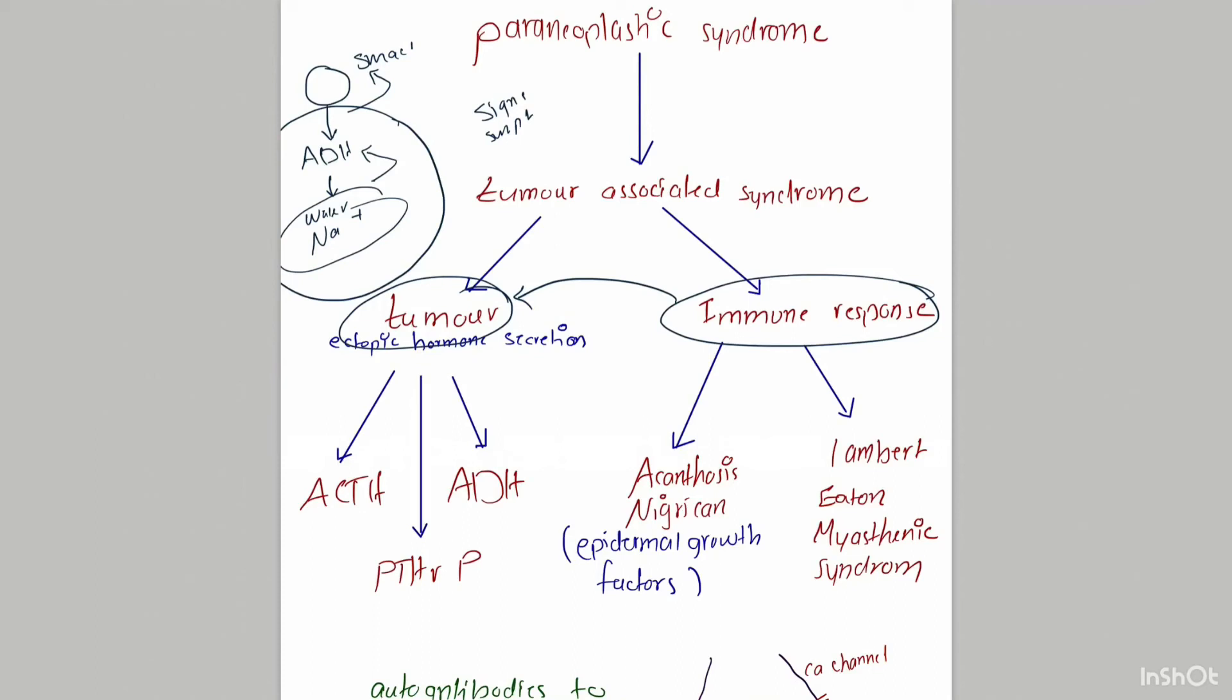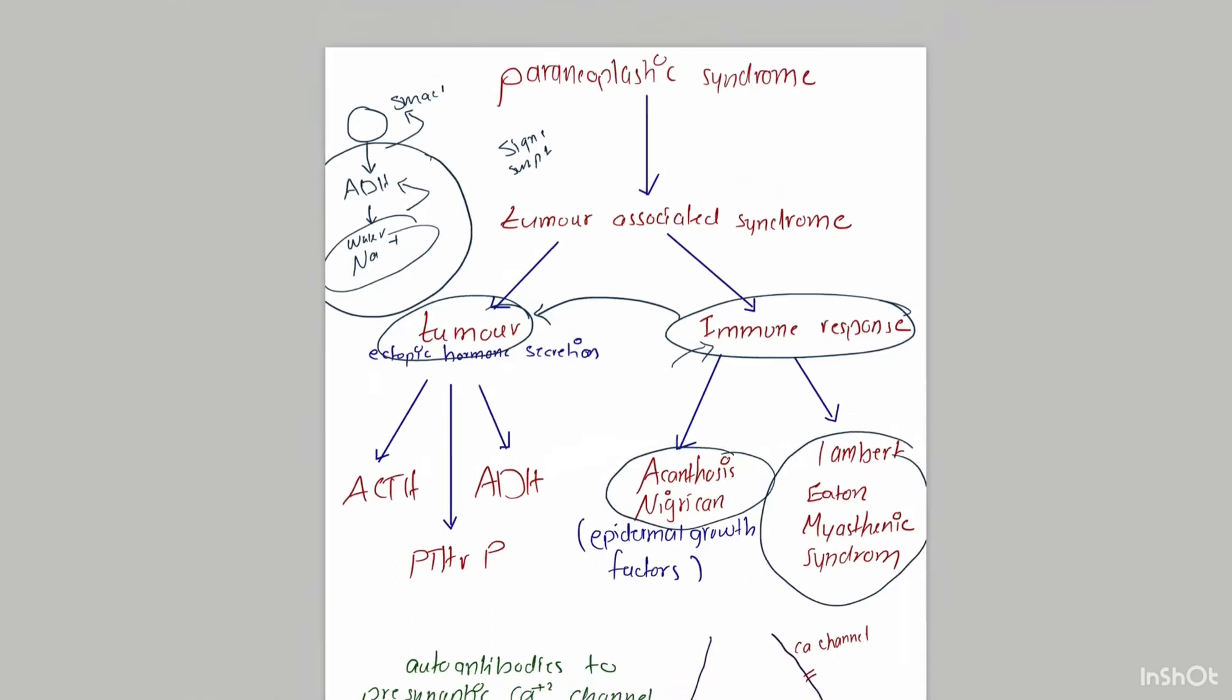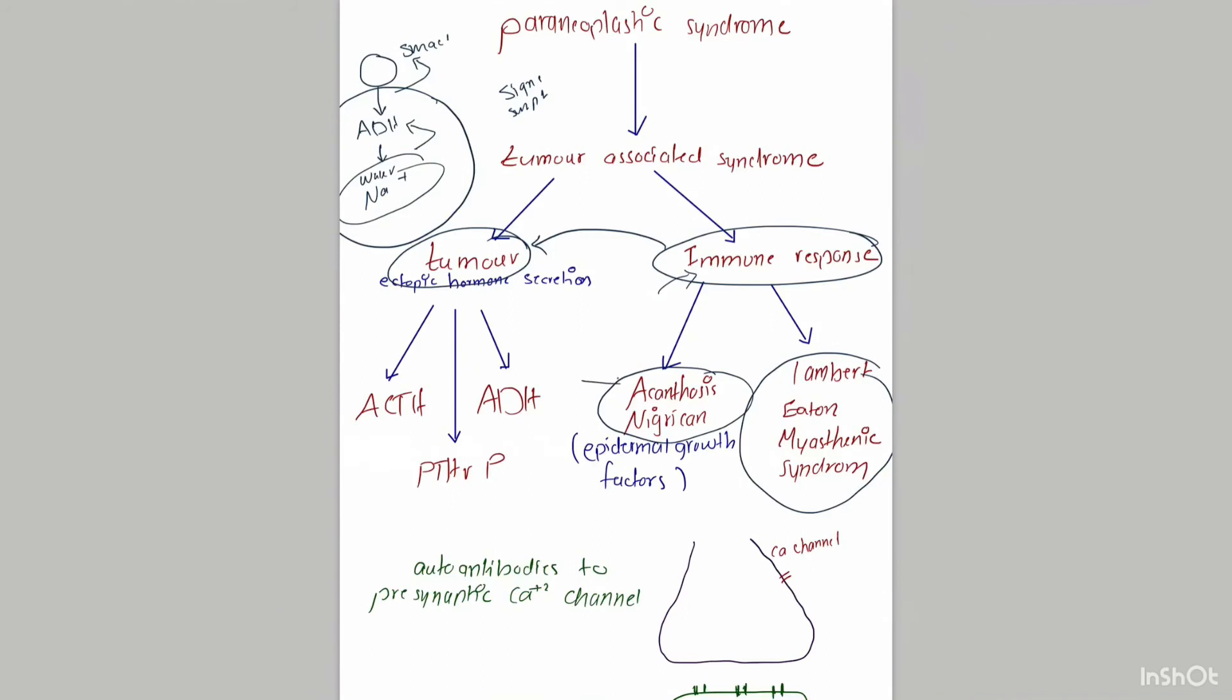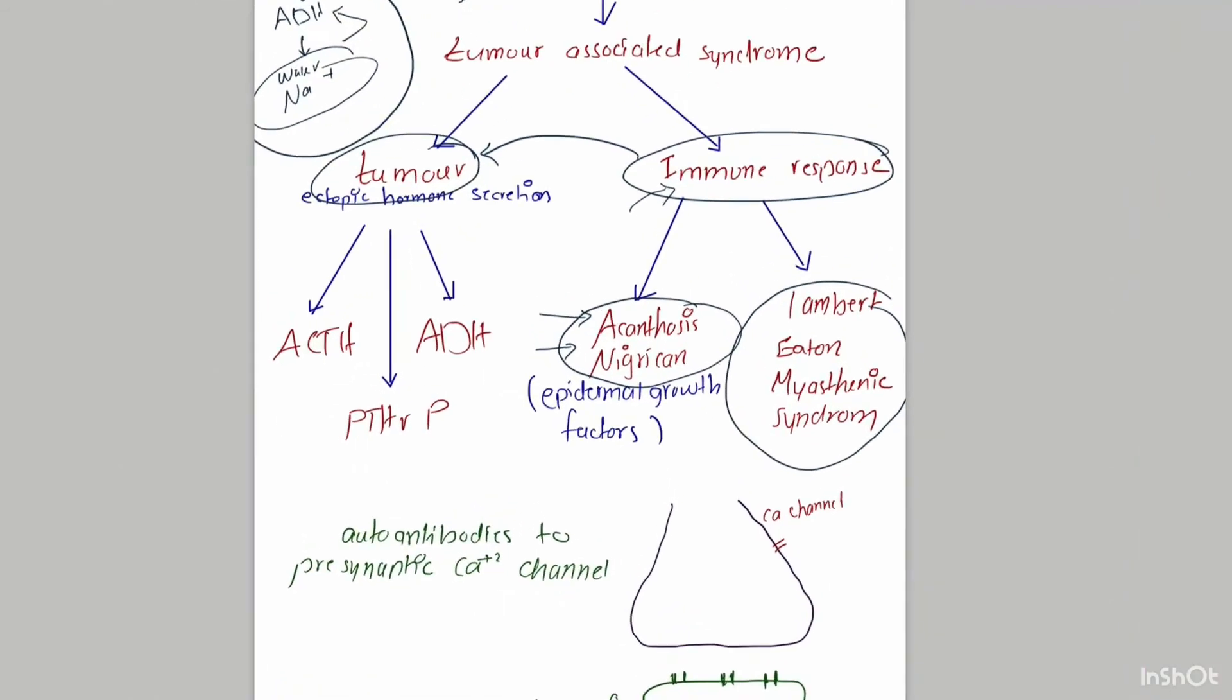Examples of paraneoplastic syndrome caused by immune response against the tumor include acanthosis nigricans and Lambert-Eaton myasthenic syndrome. Acanthosis nigricans is a gray-brown hyperpigmentation mostly occurring in the back of the neck or axilla caused by hyperkeratosis (excess keratin production).